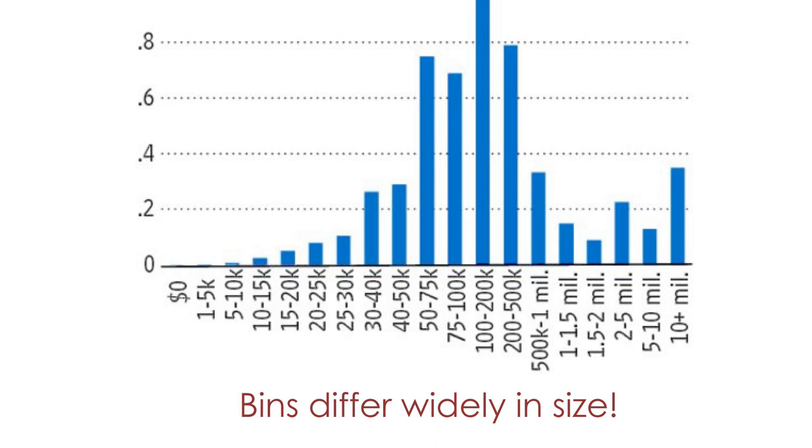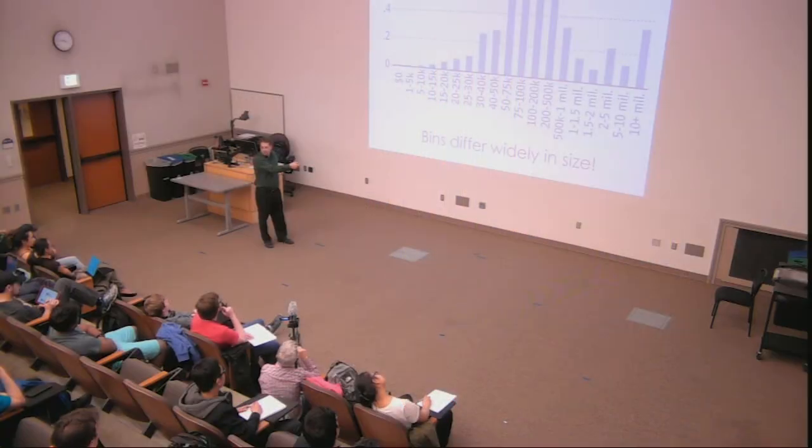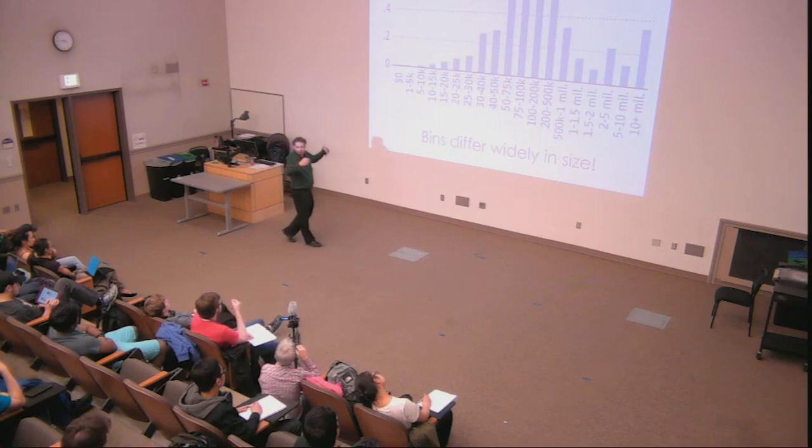The problem with this graph is that the bins differ widely in size. When we start out, we've got these bins of $4,000 interval, $5,000 intervals all through here, $10,000 intervals, $25,000 interval. And then this big bar, that middle class where all the money was, all the money is there because we went from a $25,000 interval to $100,000 interval. That's why all the money is there. That bin is really, really wide.